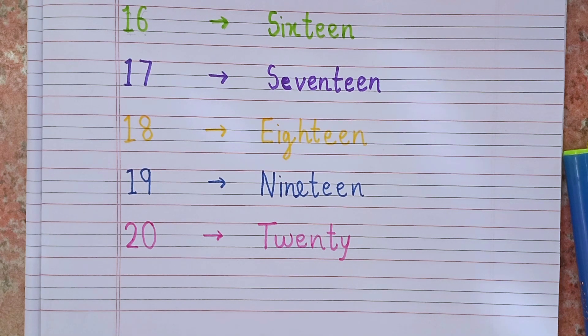Now please count with me: 1, 2, 3, 4, 5, 6, 7, 8, 9, 10, 11, 12, 13, 14, 15, 16, 17, 18, 19, 20. We have learned from 1 to 20 and their spellings. Please watch this video again and practice the spellings yourself. Hope you like this video. If you like this video, please subscribe to this channel. Thank you.